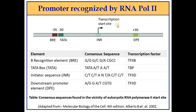For RNA polymerase 2, different promoter elements are present in the DNA. The BRE element is located around 35 nucleotides upstream of the start site (plus 1). The TATA box is located around minus 13 nucleotide base pairs upstream of the start site. There is an INR (initiator) sequence present at the transcription start site, and a downstream promoter element (DPE) present at the plus 13 nucleotide position downstream of the transcription start site.